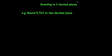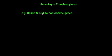Sometimes you might want to be more accurate when rounding. Rather than rounding to one decimal place, you may want to round to two decimal places. To do that, instead of looking at the second decimal place, we look at the third decimal place. For example, round 5.763 to two decimal places — the third decimal place is a 3, so we round down: 5.76.